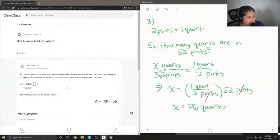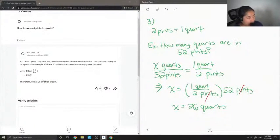So let's see what our junior tutor said. To convert pints to quarts, we need to remember the conversion factor that one quart is equal to two pints. For example, if I have 50 pints of ice cream, how many quarts do I have?